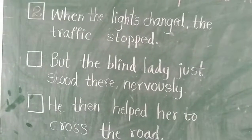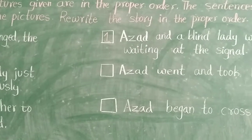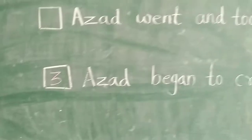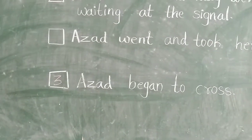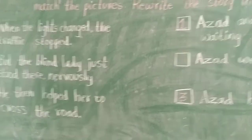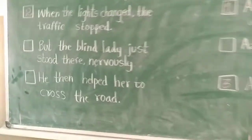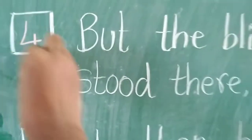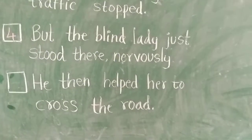The third picture — Azat began to cross the road. This sentence will be the third sentence of the story. And in the fourth picture: But the blind lady just stood there nervously. This will be the fourth sentence of the story.